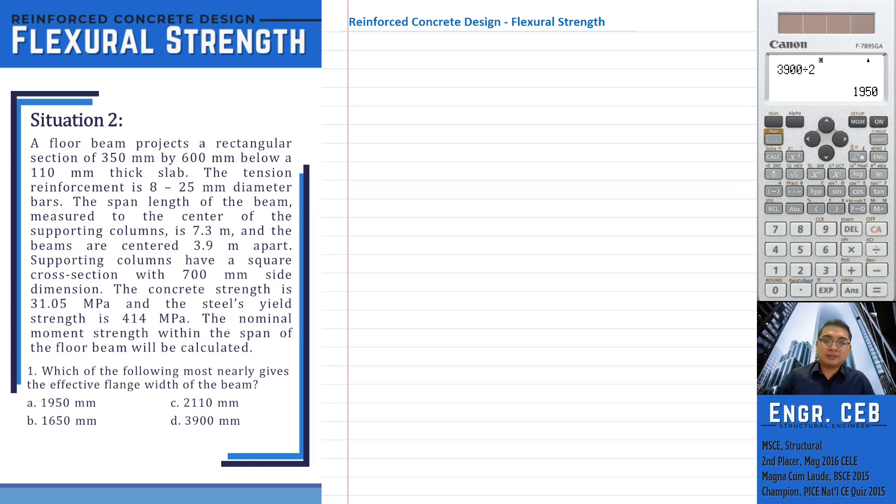A floor beam projects a rectangular section of 350mm by 600mm below a 110mm thick slab. The tension reinforcement is 8 25mm diameter bars. The span length of the beam measured to the center of the supporting columns is 7.3 meters and the beams are centered 3.9 meters apart. Supporting columns have a square cross-section with 700mm side dimension. The concrete strength is 31.05 MPa and the steel yield strength is 414 MPa. Which of the following most nearly gives the effective flange width of the beam?